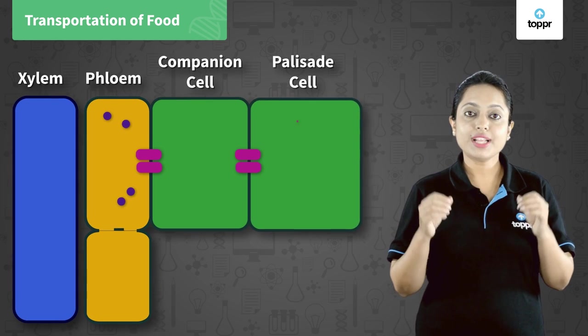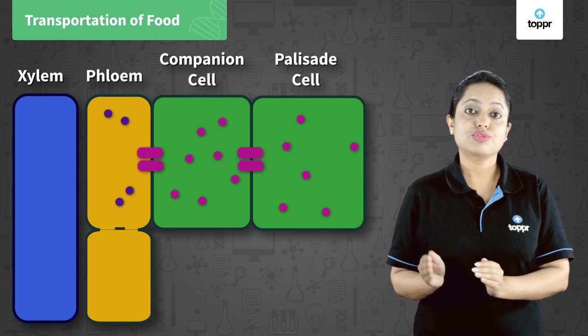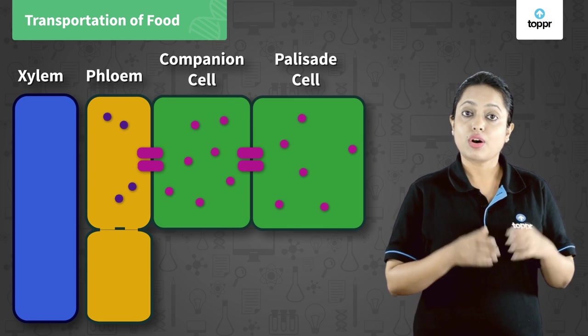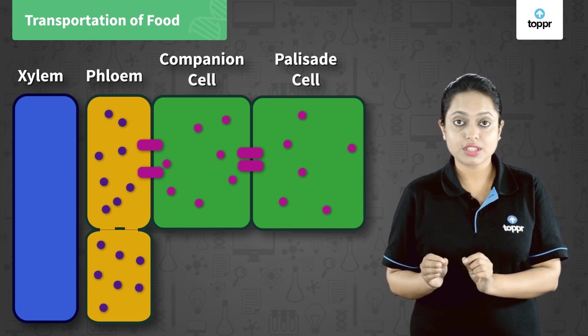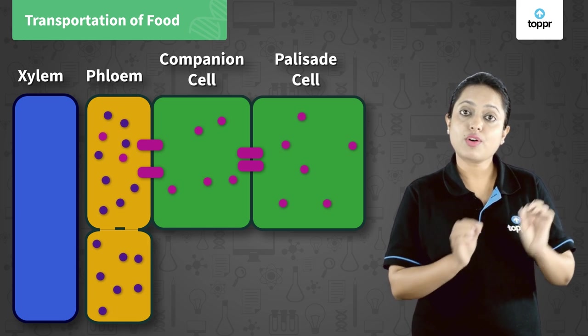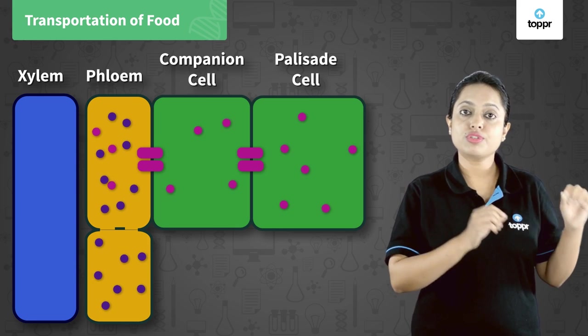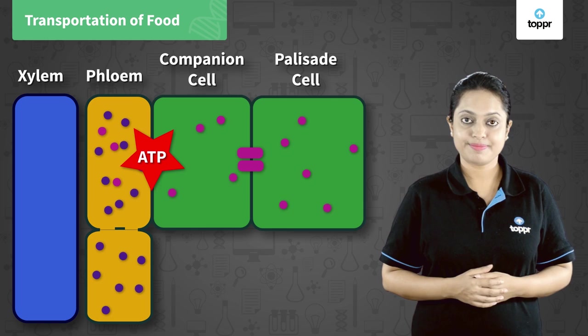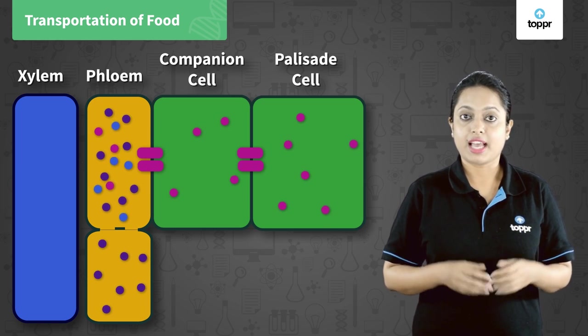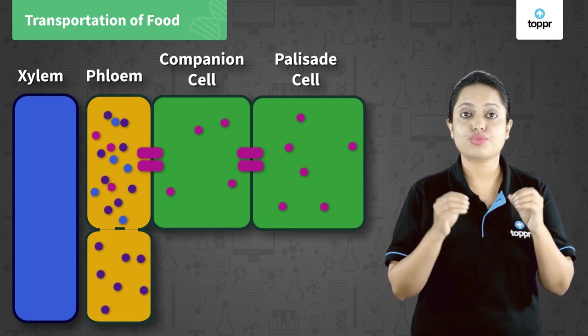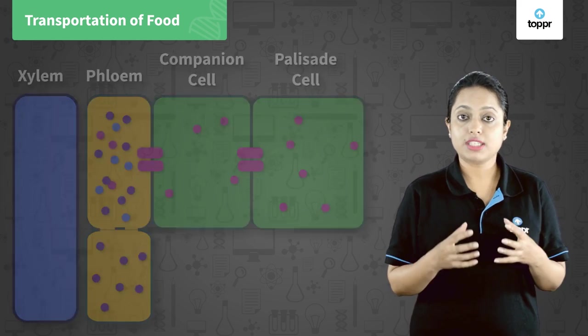When food is synthesized in the leaves, it is transported to the sieve tubes of the phloem tissue. Since the sieve tubes are already filled with food, this food is transported from low concentration in the leaves to high concentration in the sieve tubes, requiring energy from ATP. Water from the surrounding xylem cells then enters the sieve tubes through osmosis, and from here the food solution is transported to all parts of the plant. Water serves as the transporting medium in plants, similarly to how blood serves as the transporting medium in us.